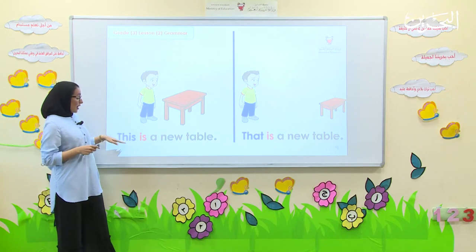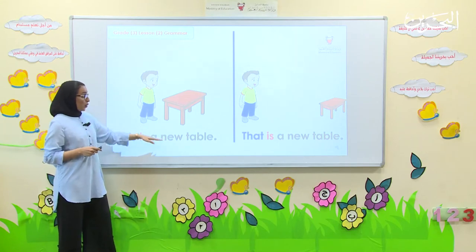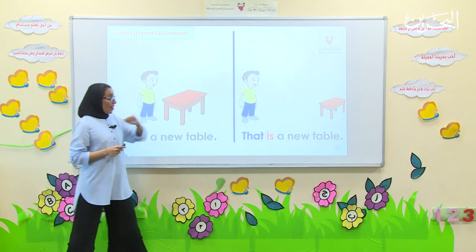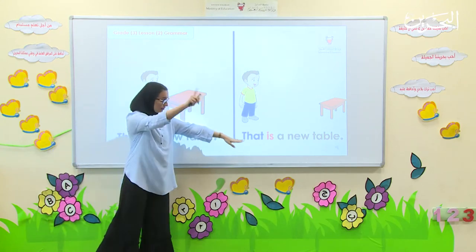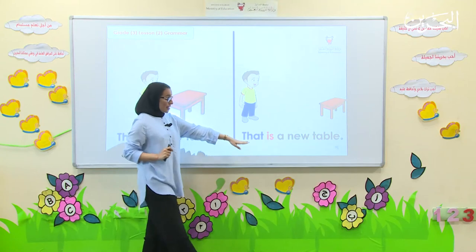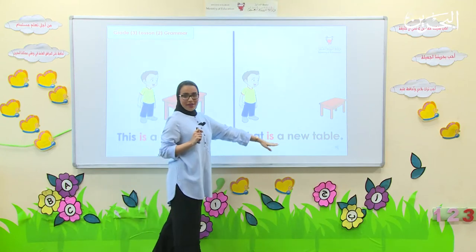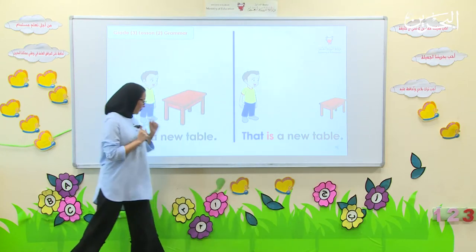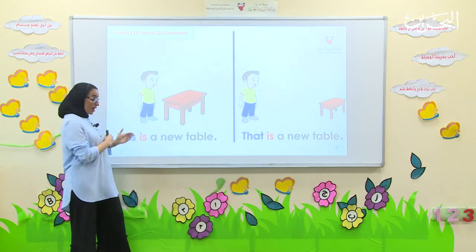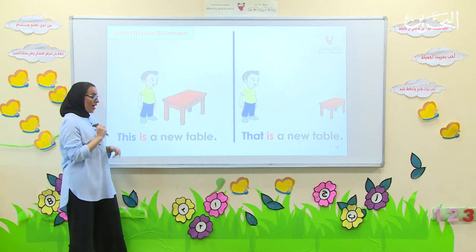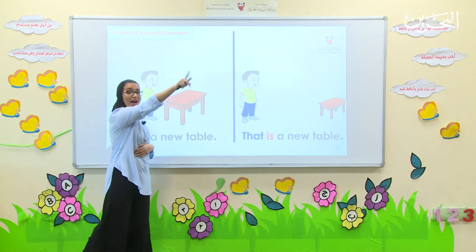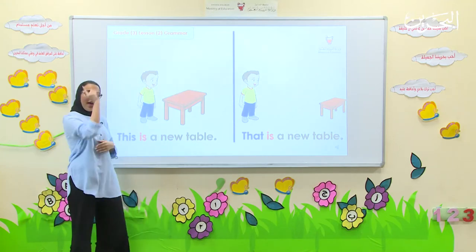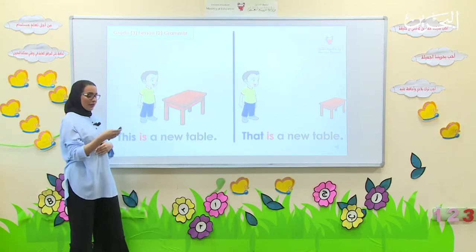Here we go again. This is a new table and that is a new table. So, look: 'this is' and 'that is' — near and far.